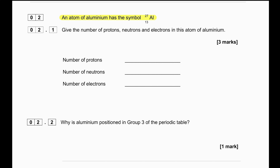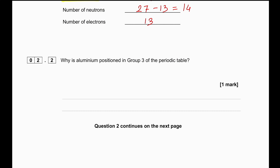An atom of aluminium has the symbol ²⁷₁₃Al. Give the number of protons, neutrons, and electrons. The number of protons is 13. The number of neutrons is 27 minus 13, which gives us 14. The number of electrons is equal to the number of protons, so 13.